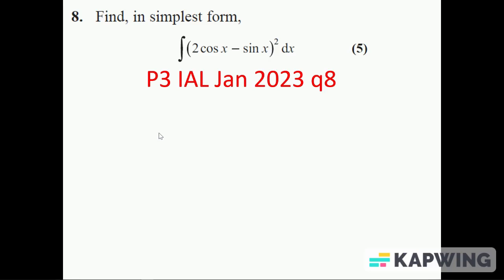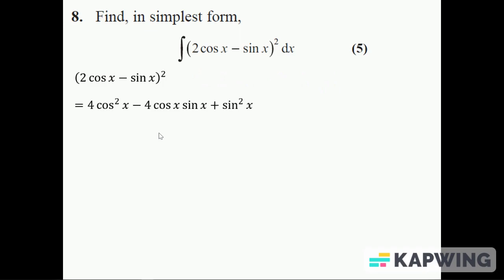This is P3 International A Level January 2023, a question on trig integration: integral of (2cos x - sin x) squared. When doing integration, it's much easier to do little terms rather than big ones, so we're going to expand that bracket out first: 4cos^2 x - 4cos x sin x + sin^2 x. So I've got three separate smaller terms rather than one big one.